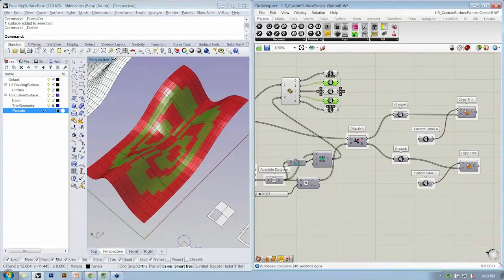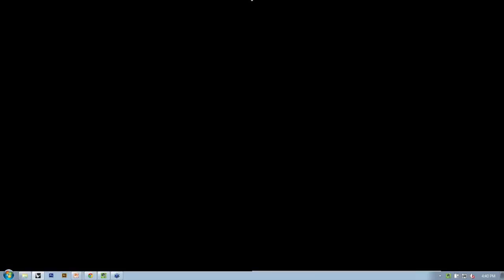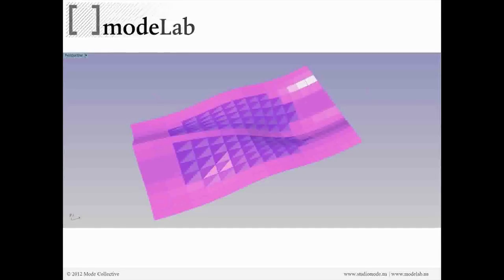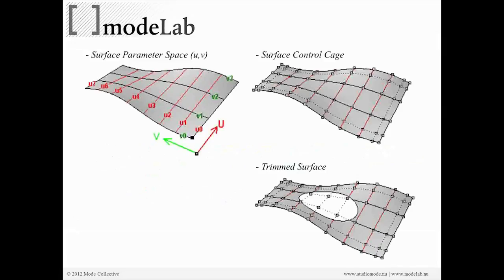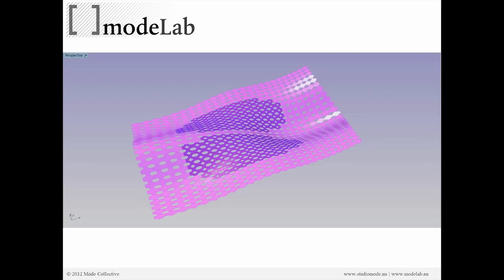All right, so we're going to wrap up the webinar now. We looked at how we might conditionally triangulate quads by dispatching them onto two lists. We talked about the nature of trim surfaces, the control cage, and specifically how the control cage still exists beyond that trim, and how we could take the parameter space trimmed of one surface and apply it to another. We looked at a couple of different ways to define your own custom quads, based on the panel types provided, so go ahead and experiment with them after the webinar.